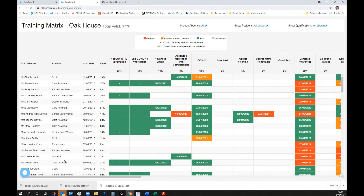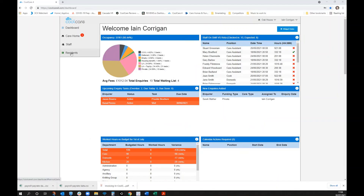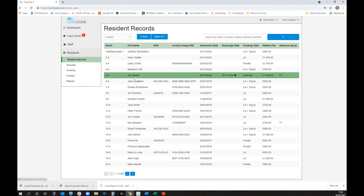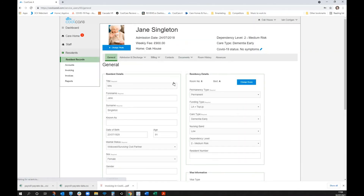That's the staffing section. Now we'll look at the final section — residents and invoicing. When an individual moves from being an inquiry to being admitted, much of the data is pre-populated. This is where fee contracts and invoices are created. Looking at a resident record for Jane, you can see when she was admitted, her weekly fee, which home she's in, dependency level, care type, COVID status, and her room details.